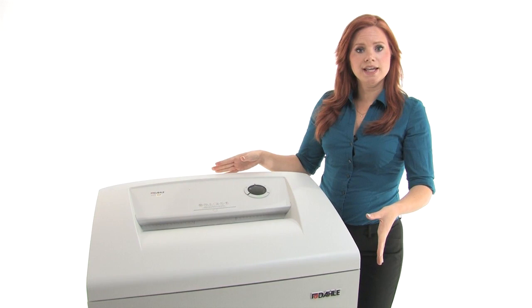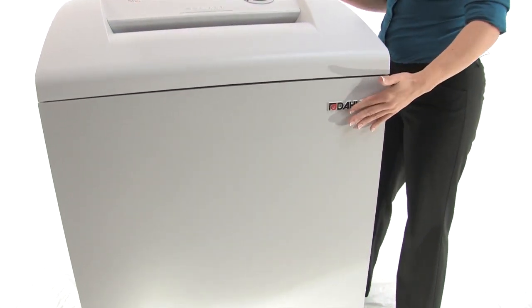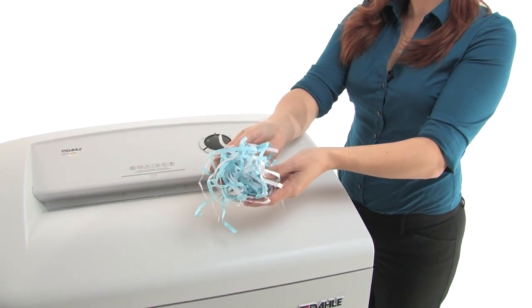This sits on locking casters for easy mobility. Down here we have a huge 38 gallon bin and this is what your strip cut is going to look like.